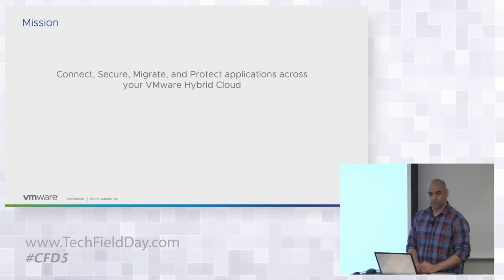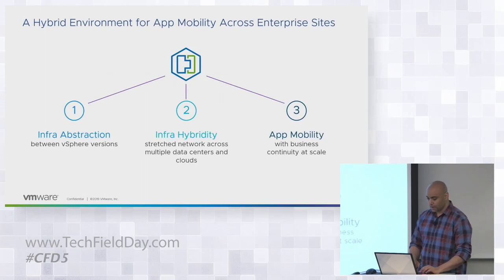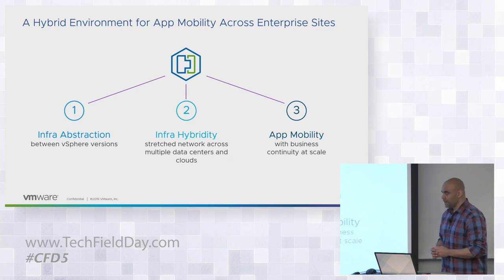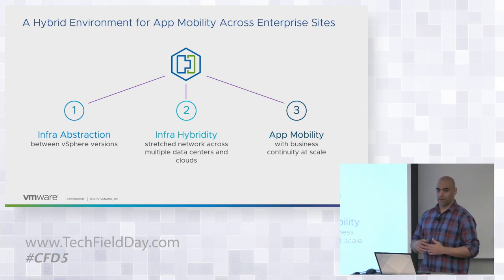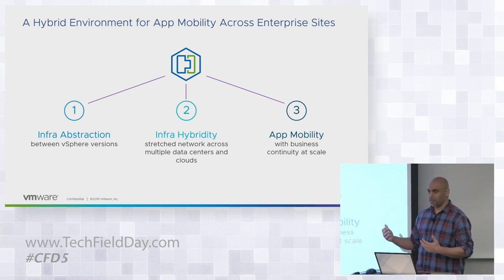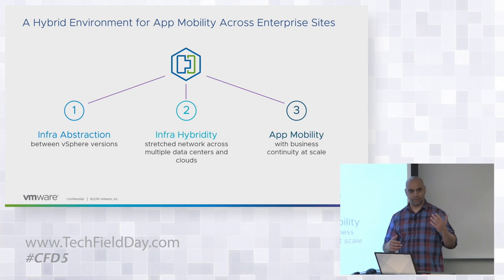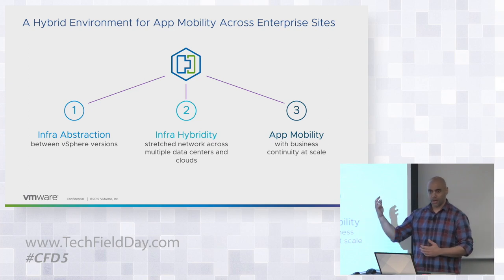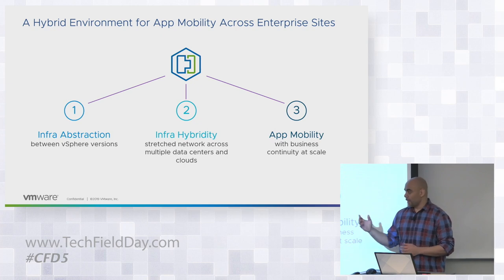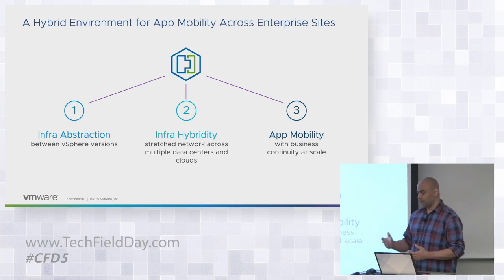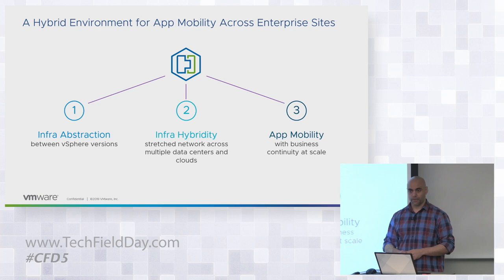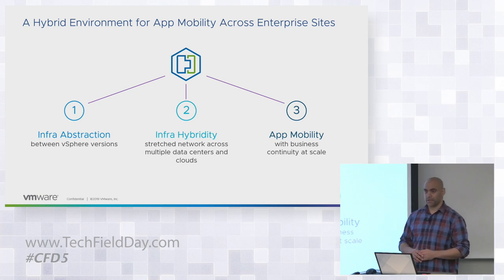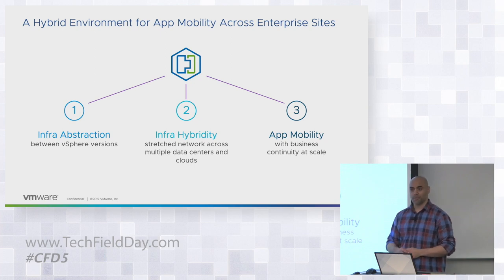Basically, we want to connect, secure, migrate, and protect applications across your hybrid cloud. With VMware HCX, we don't really care about vSphere versions. Whereas typically before, you would have to be on a certain version between on-prem and the cloud — like vSphere 6.0 or whatever. Now we go as far back as out-of-support versions like vSphere 5.0. So if you have those legacy versions, legacy applications sitting there, and you don't want to replatform, you can bring them over to the cloud side with HCX.